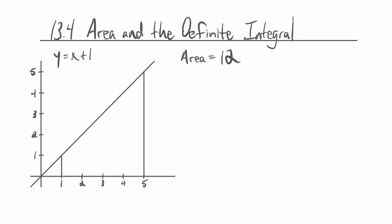One option is to just use this rectangle here and take it as a really, really poor underestimate. If I only use one rectangle, my estimate would be four units, which is off by a lot. This is the tallest rectangle that fits inside the trapezoid.